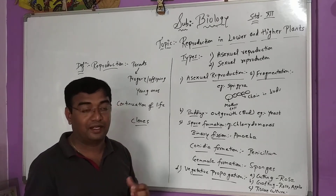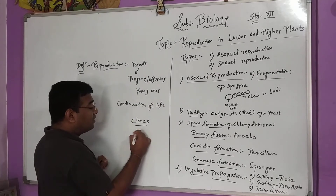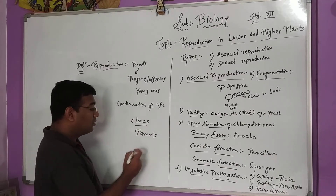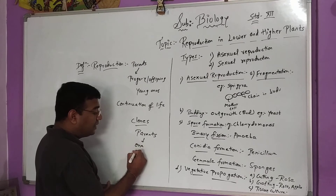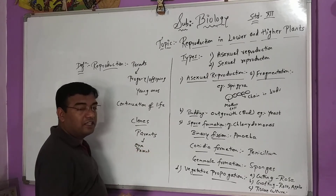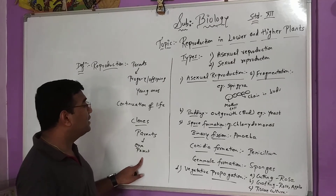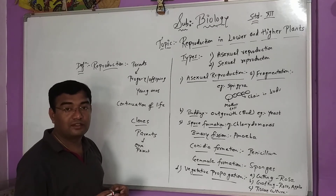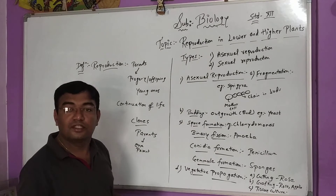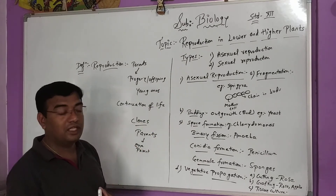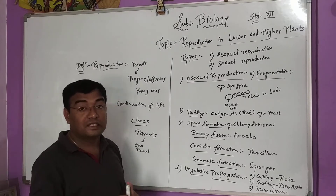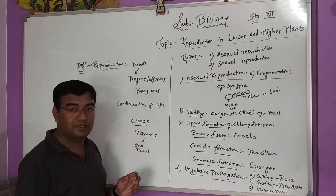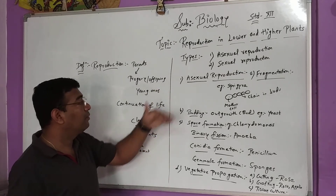Now you will ask what is meant by a single parent. Generally, parents play a very important role. If there is involvement of only a single parent — one parent, without a second partner — then we say this is an example of asexual reproduction. But when two parents come together and a new kind of species is developed, that will come under sexual reproduction. So asexual reproduction involves only a single partner, and it is generally used for the preparation of clones — the same kind of species as the parents.